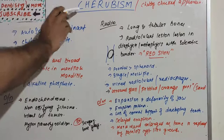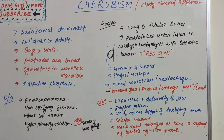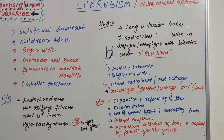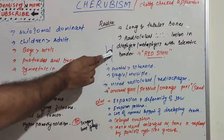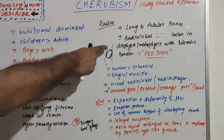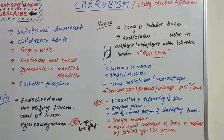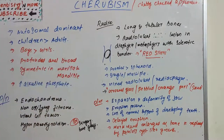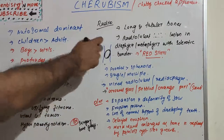Such a chubby cheek appearance is a hallmark feature of Cherubism. Another feature is increased alkaline phosphatase, which is seen in most non-inflammatory diseases of bone. In the radiographic features, there are long and tubular bones with radiolucent lesions in the diaphysis and metaphysis with a sclerotic border, which is known as the 'red sign' — a striking feature of Cherubism.